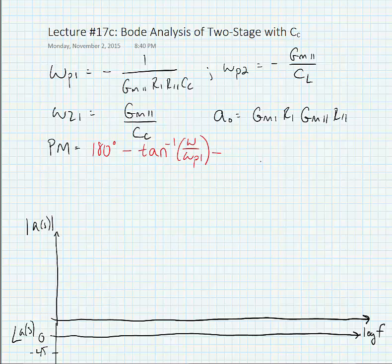We expect that the zero or pole frequency for the second pole and the first zero can be interchanged. So we're just going to say minus tangent inverse of omega divided by omega p2 minus tangent inverse of omega divided by omega z1.